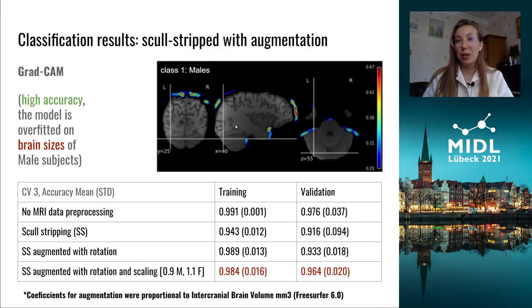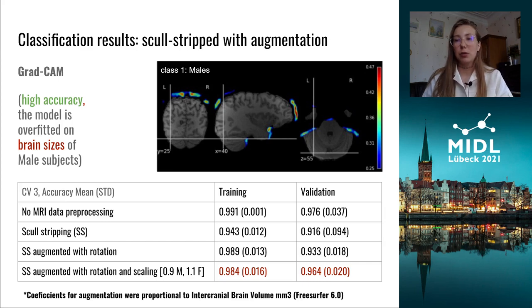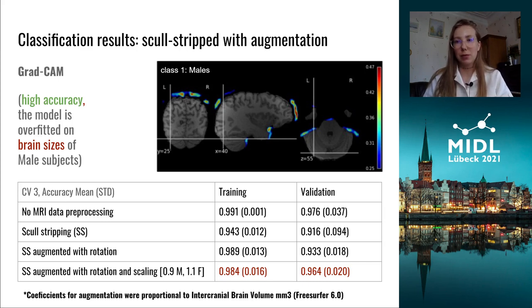So we augmented the data. For the augmentation scale, we used the average intracranial volumes for males and females, and we actually increased accuracy using this augmentation.